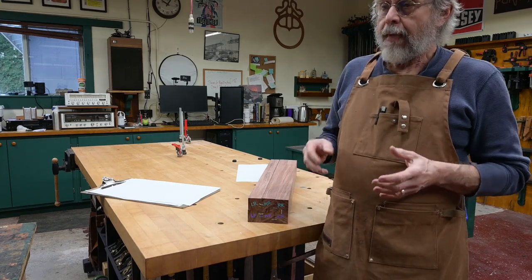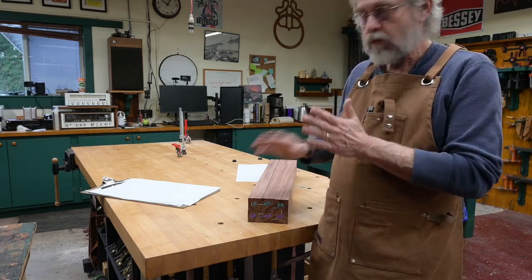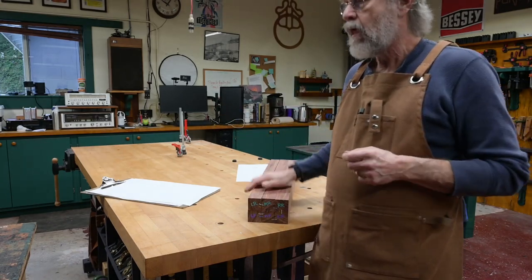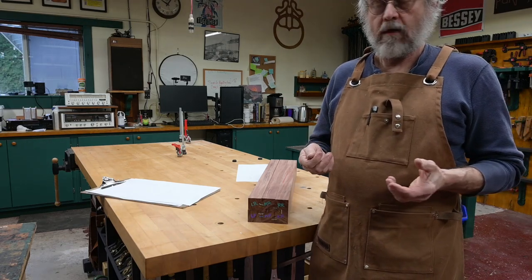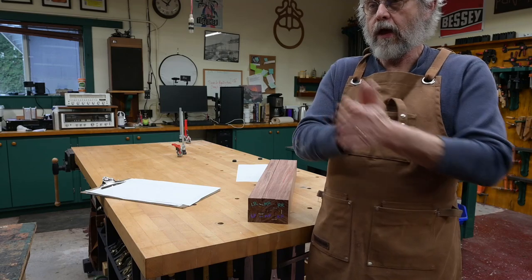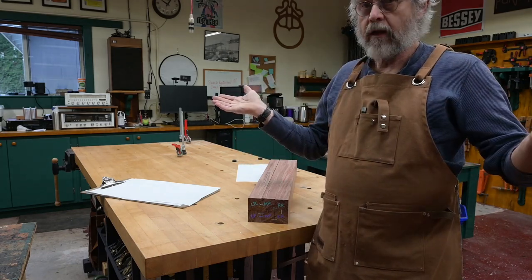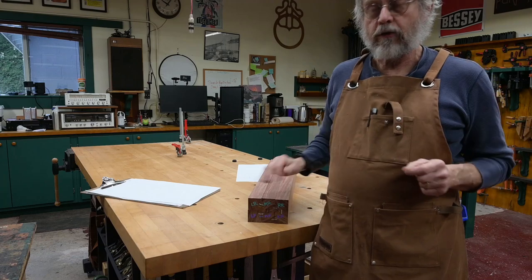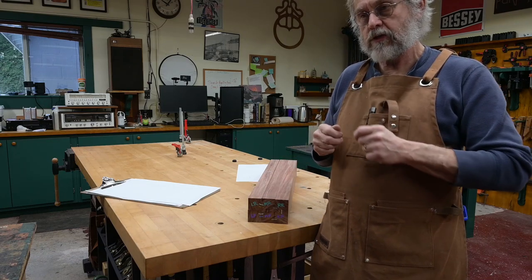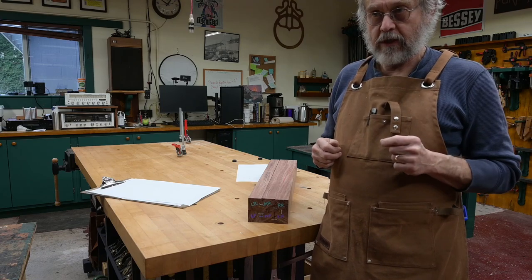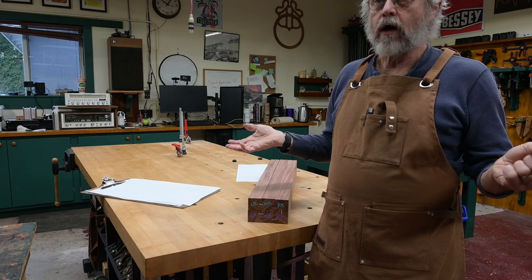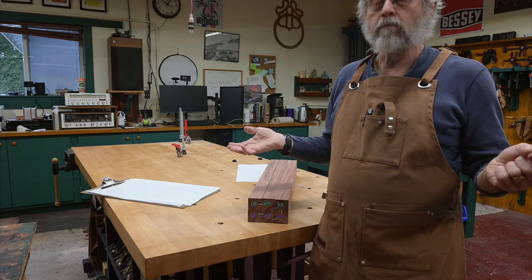A note here: the cut list that goes along with the purchase package of the plans is for floating tenons. I'm not wedded to any sort of—you know, my way is the right way. If you're wanting to do traditional tenons, you're going to have to take a look at all those pieces that would have a traditional tenon and add that into the length, because I'm going to do mostly floating tenons on the multi-router.